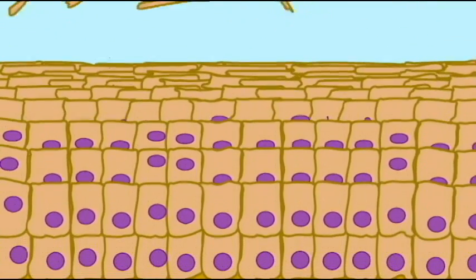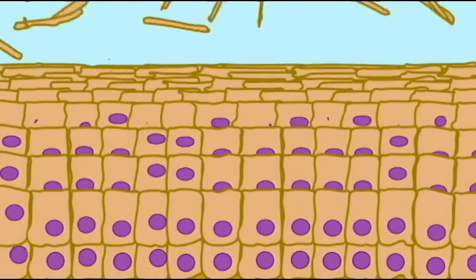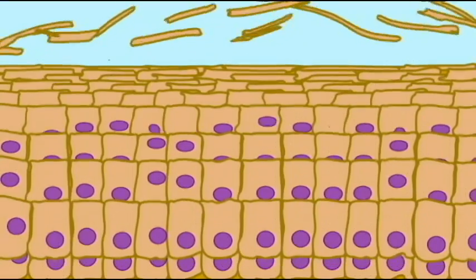And so there are a number of anatomical barriers which help to prevent the entry of microbes.